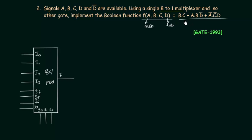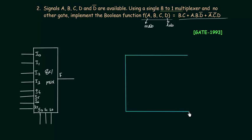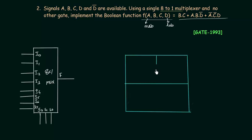The given Boolean function is bc + abd' + a'c'd. I will implement this using a Karnaugh map. We have 4 variables so we need to make a 16-cell K-map in which the MSB is a and the LSB is d. Implementation of a Boolean function using multiplexers is very easy when you use the K-map.